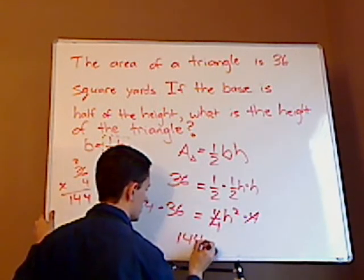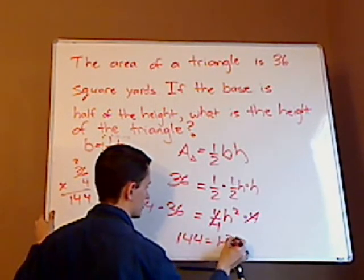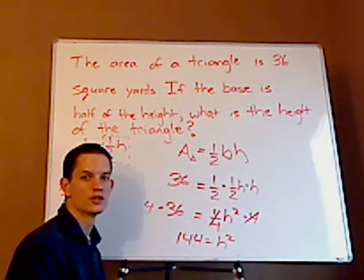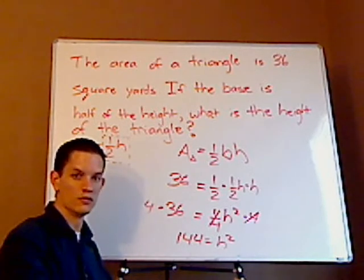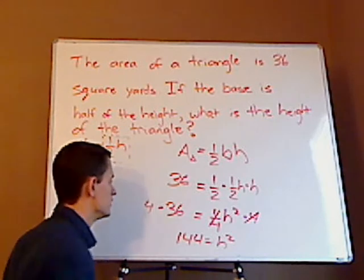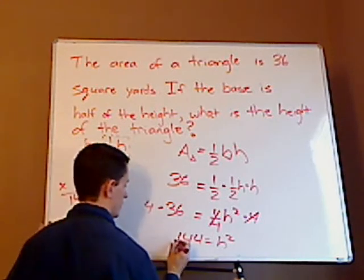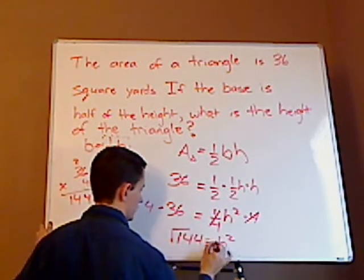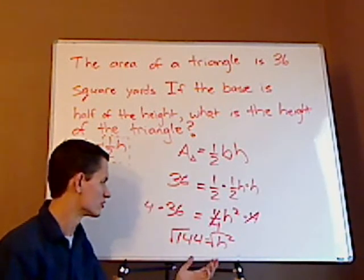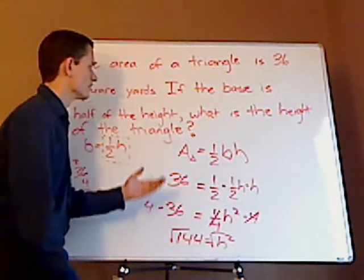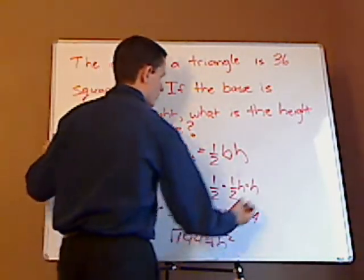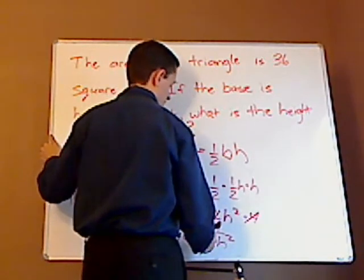So this gives us 144 equals h squared. Now, to undo a square, you use a square root. You square root each side. You actually get a plus or minus when you take the square root of a square, but since you're dealing with height, height is positive. So the square root of 144...